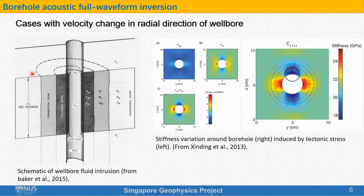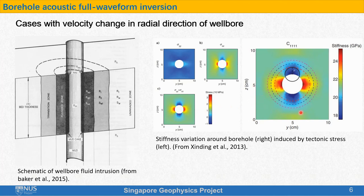This slide shows some cases with velocity change around the borehole. This is the schematic of wellbore fluid intrusion — sometimes borehole fluid will intrude into original rocks, creating a flushed zone and transition zone. Normally, velocities in the flushed zone and transition zone would be slower than velocities in original rocks. This figure shows that drilling a borehole could change stress distribution in the rocks around the borehole. The change of stress would cause opening or closure of micro-cracks in the rocks, which further leads to stiffness variations and velocity variations around the borehole.